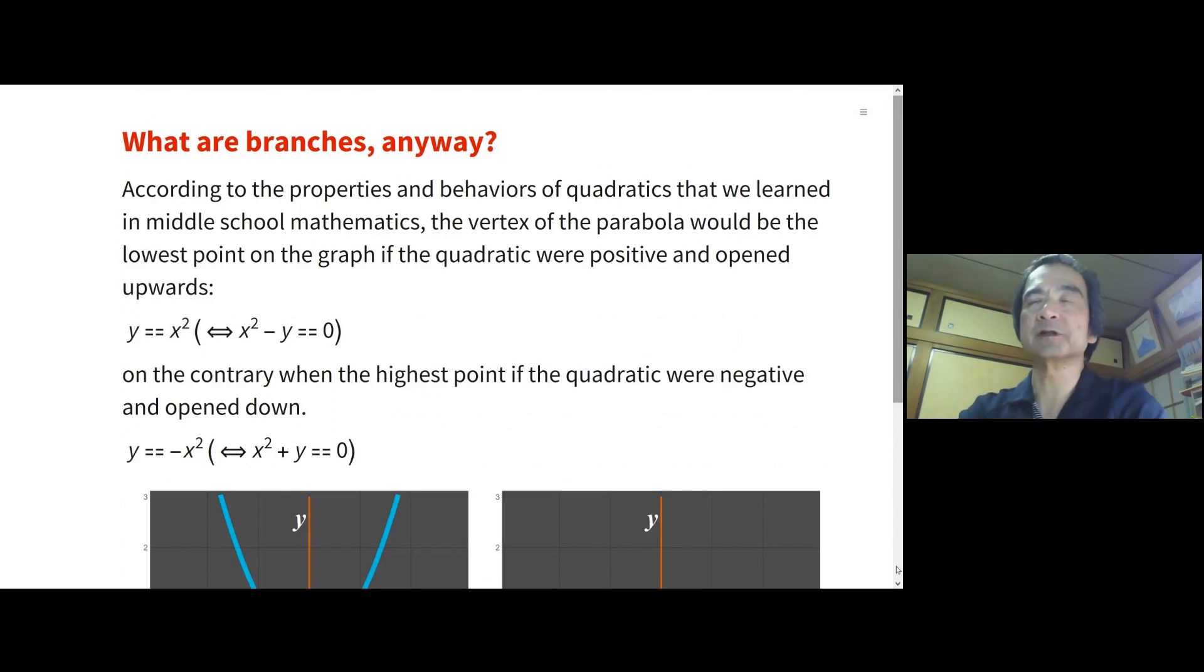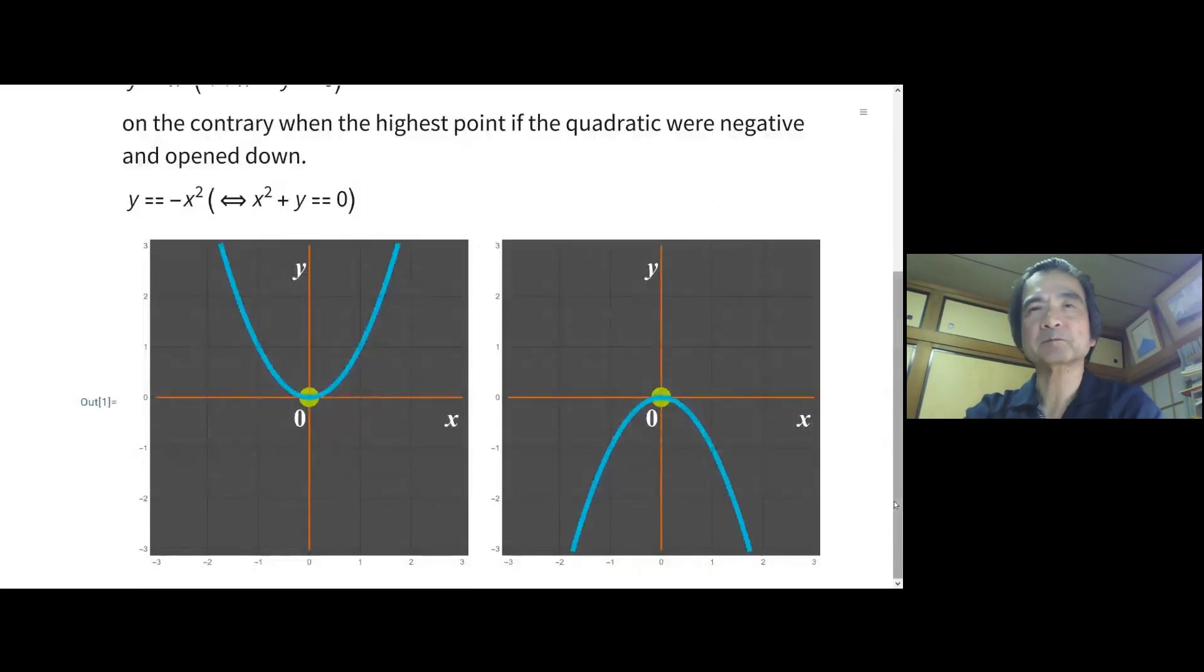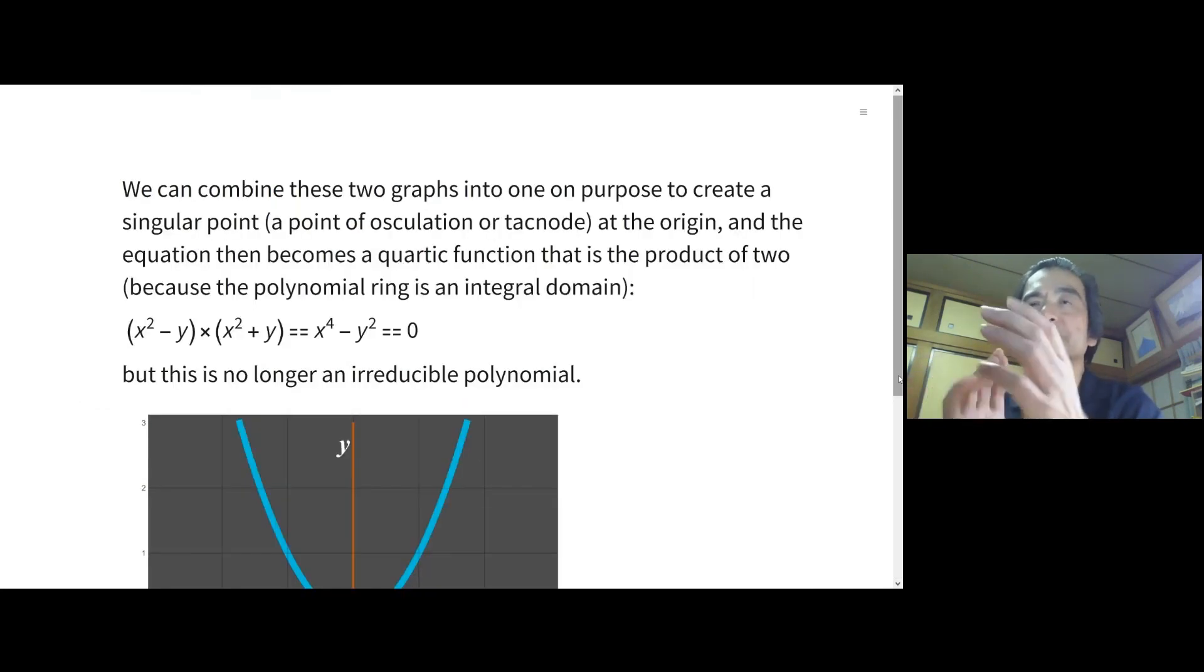So let's start on what are branches anyway. According to the properties and behaviors of quadratics that we learned in middle school mathematics, the vertex of the parabola would be the lowest point on the graph if the quadratic were positive and opened upward. On the contrary, the highest point if the quadratic were negative and opened down. We can combine these two graphs into one on purpose, to create a singular point at the origin - a tack node at the origin. The equation then becomes a product of two polynomials. But this is no longer an irreducible polynomial.